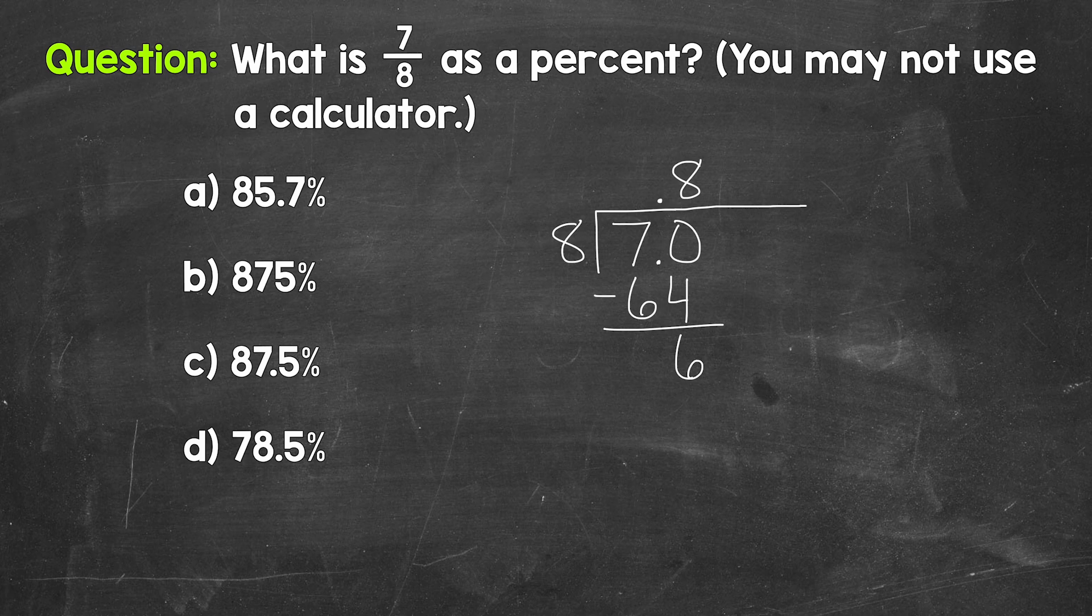Subtract, 70 minus 64 is 6. So we don't have that clean cut 0 there at the bottom. So we can continue on by using another 0 that we can bring down. And now we have 60. 60 divided by 8.